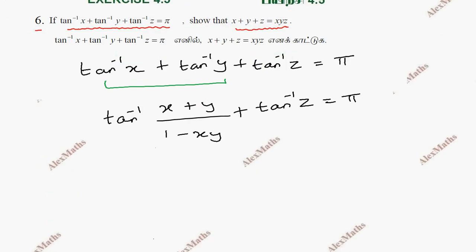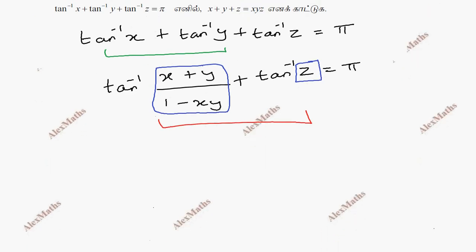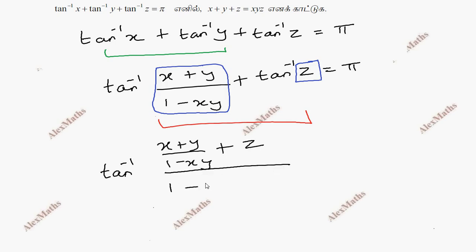Once again, applying the formula to this term. This entire term and tan inverse z is equal to pi. So we get tan inverse of x plus y over 1 minus xy, combined with tan inverse z, is equal to pi.